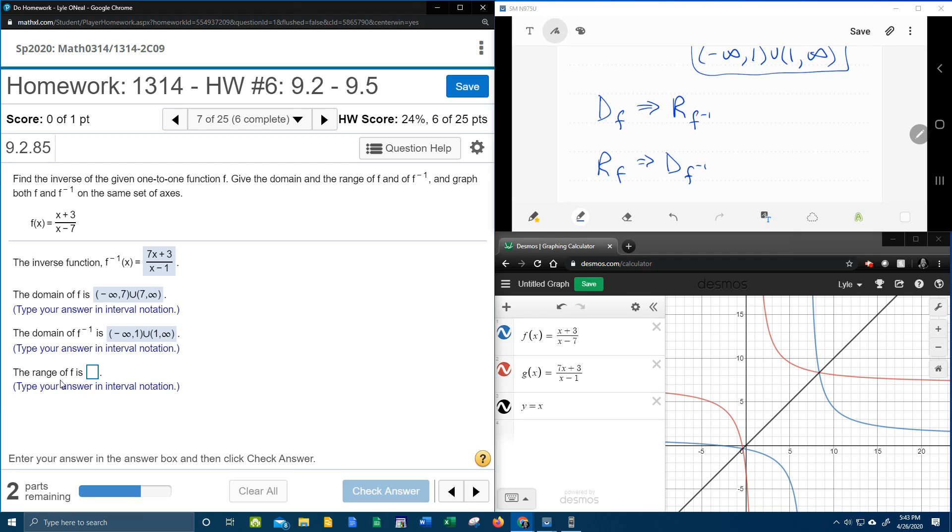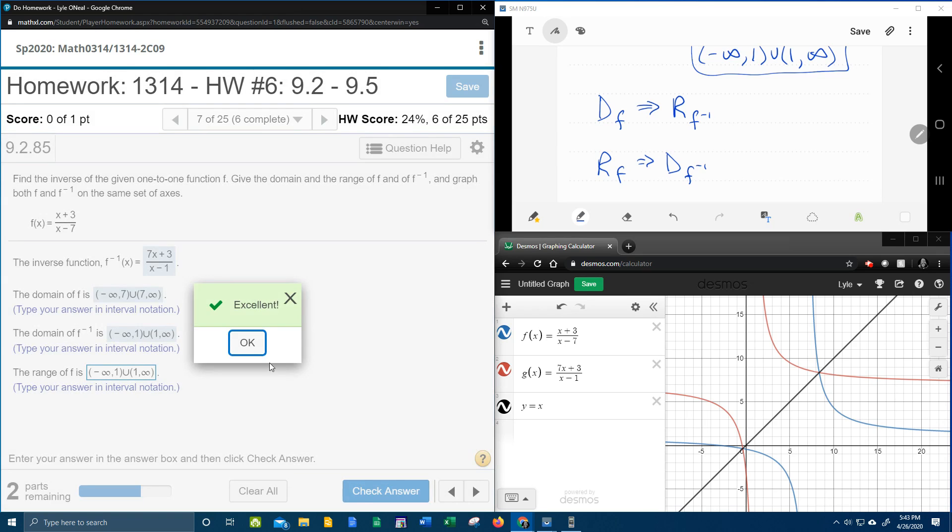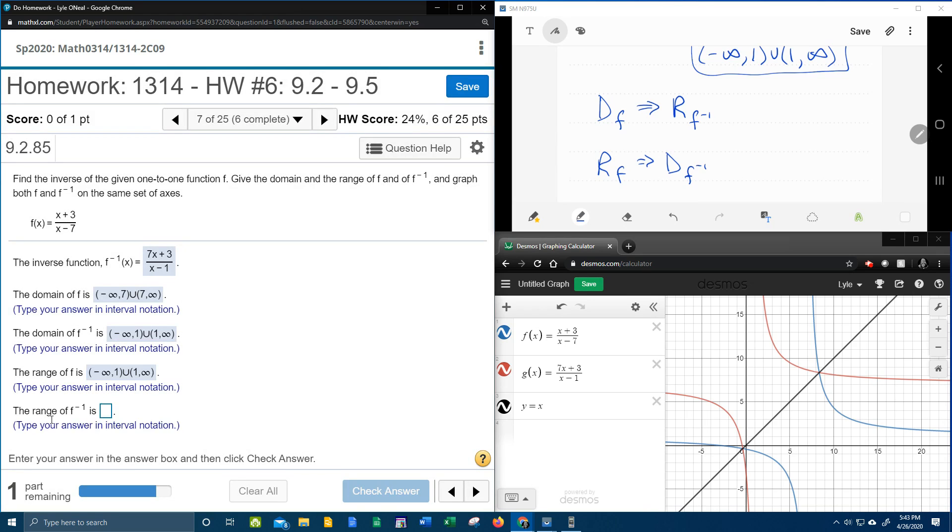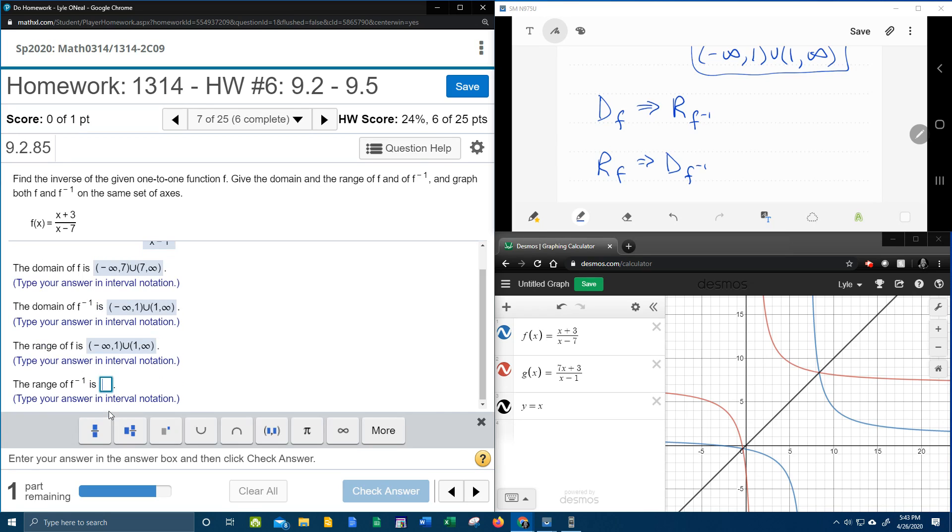So if I want the range of the original, that's going to be the same as the domain of the inverse. Negative infinity to 1, skip over 1 to infinity.